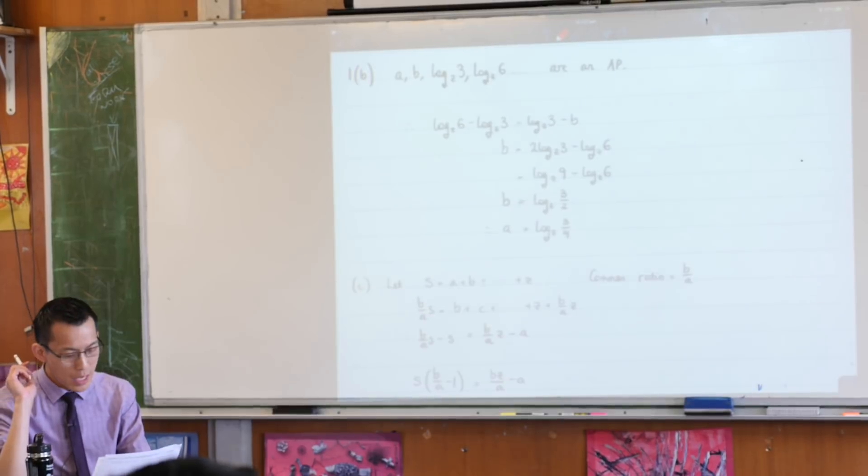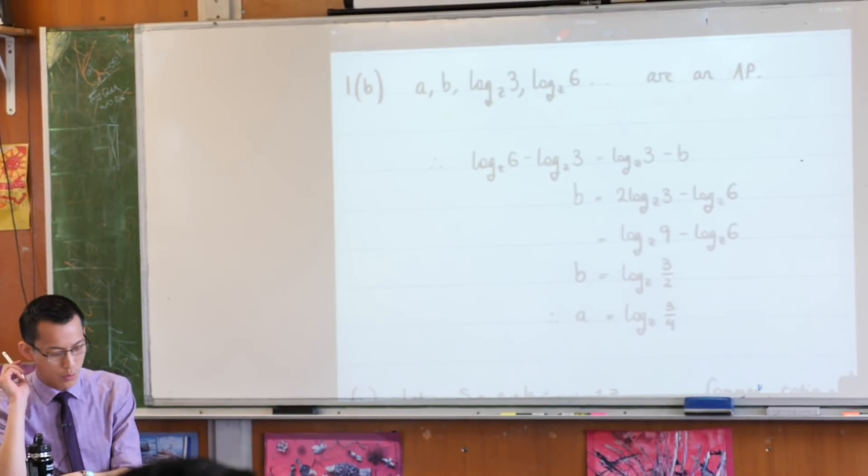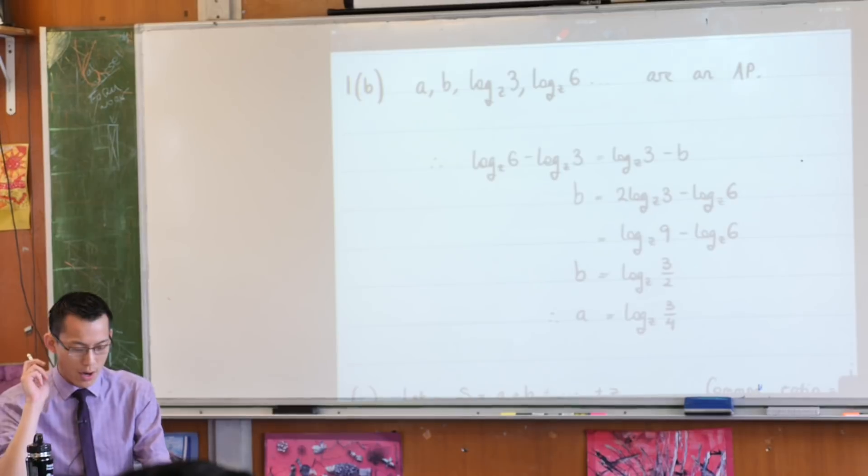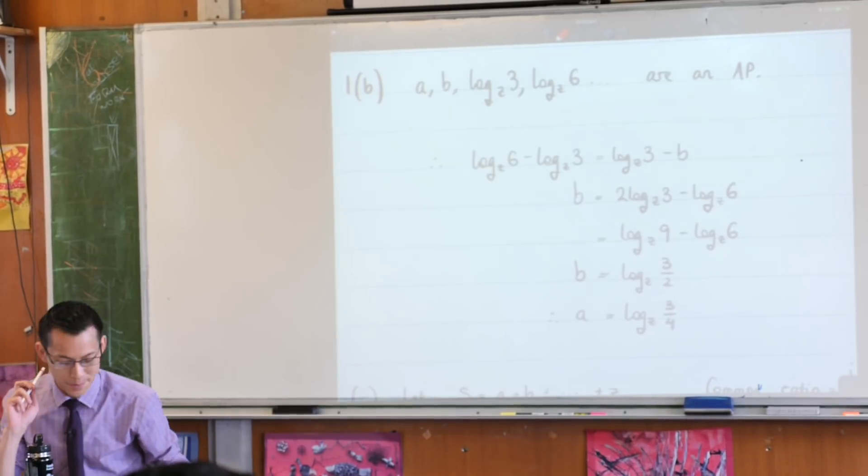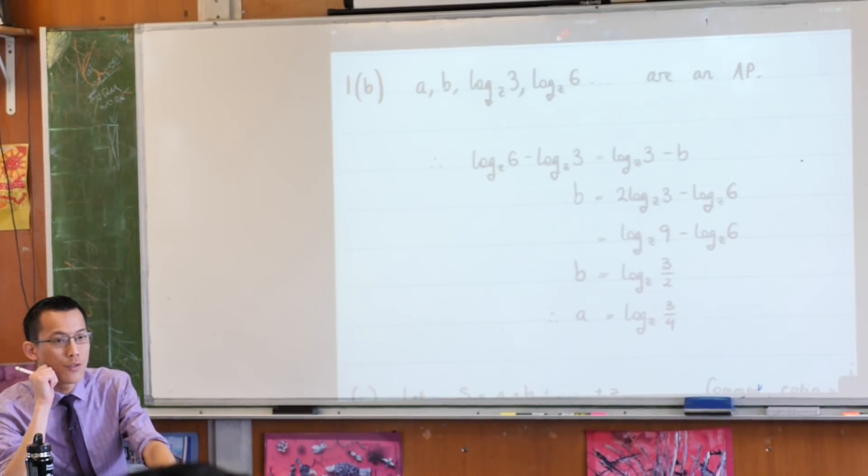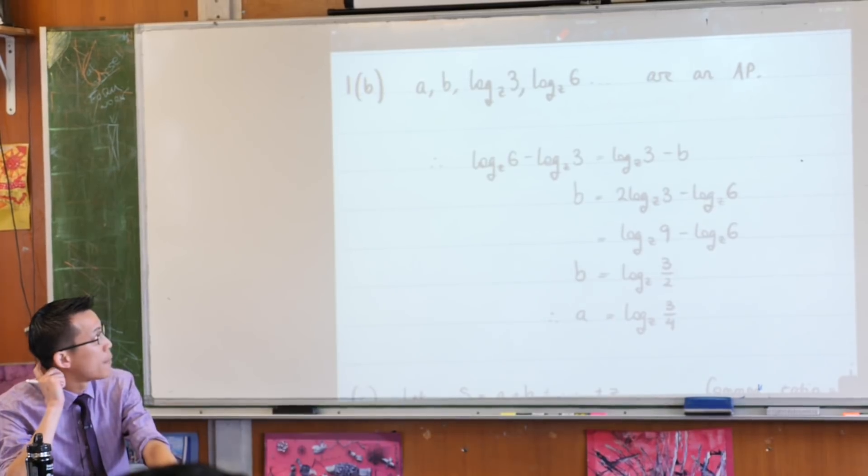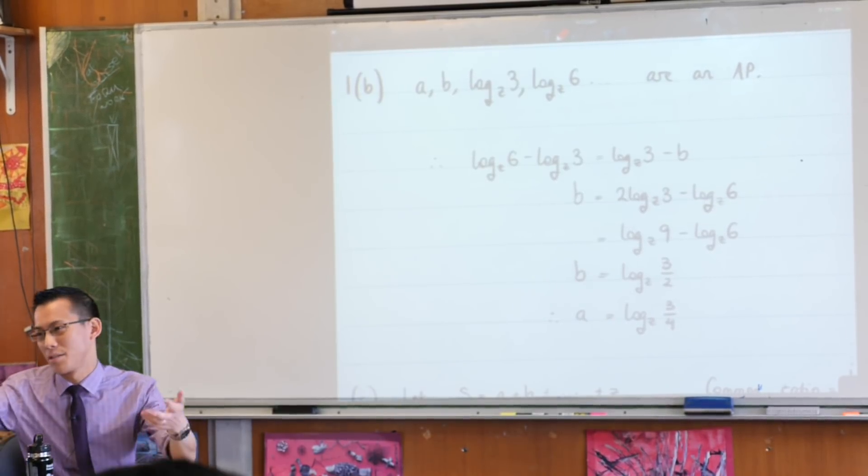So 1b. Now, admittedly, it's phrased in a bit of an unusual way. Find the values of a and b such that you form an arithmetic progression out of those.